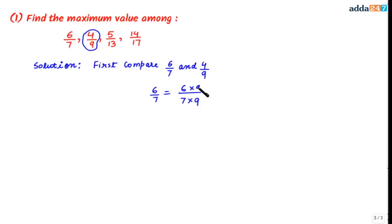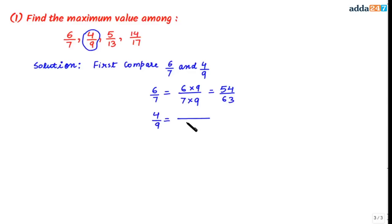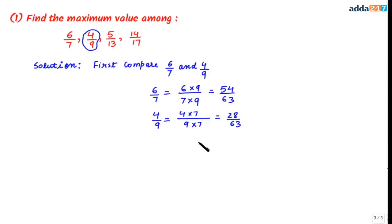Multiplying the numerator 6 by 9 gives 54, so 6/7 becomes 54/63. Similarly, for 4/9, we multiply 9 by 7 to get denominator 63, and 4 × 7 = 28, so 4/9 becomes 28/63. Now in 54/63 and 28/63, the denominators are the same, so we can compare them.